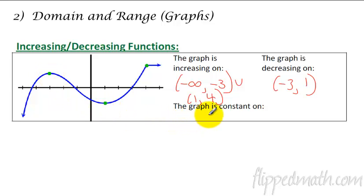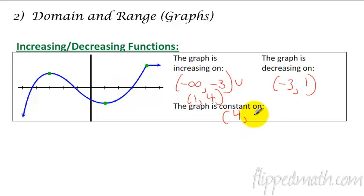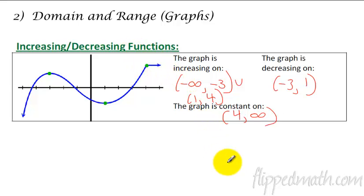And then it's constant from the value of 4 to infinity. Does that seem familiar? Hopefully. It's going from there to there. And we just use parentheses on these, not brackets.